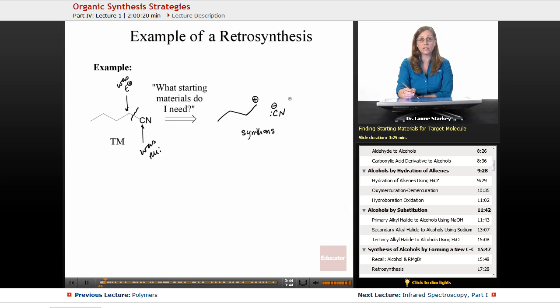And in some cases, the synthons are recognizable and reasonable reagents we can use. So in other words, cyanide is a stable anion. We could simply purchase sodium cyanide and use that as a nucleophile. But this carbocation is an impossible reagent to use. You can't go to the stock room and ask for a carbocation, even if it's a stable carbocation. Carbocations are just fleeting intermediates and so not stable reagents.